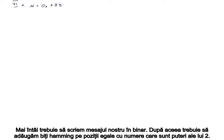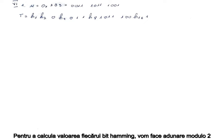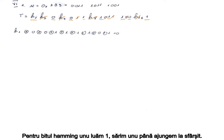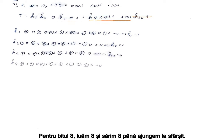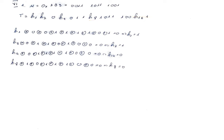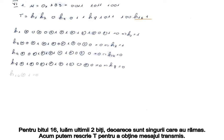We first need to write our message in binary. After that, we need to add Hamming bits on positions equal to numbers that are powers of 2. To compute the value of each Hamming bit, we will do modulo 2 additions. For bit number 1, we take 1 and skip 1 until we reach the end. For Hamming bit 2, we take 2 and skip 2 until we reach the end. For Hamming bit 4, we take 4 and skip 4. For Hamming bit 8, we take 8 and skip 8. For Hamming bit 16, we take the last 2 bits since they are the only ones left. Now we can rewrite to get the transmitted message.